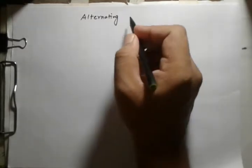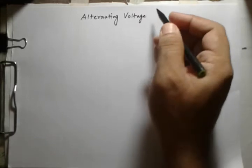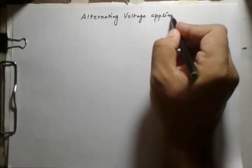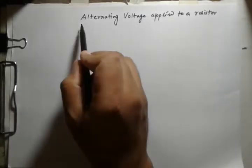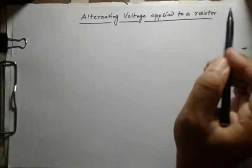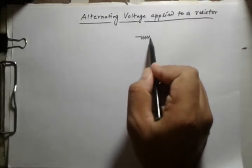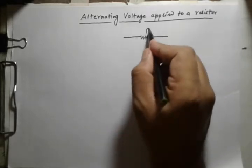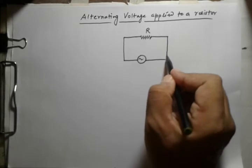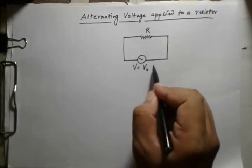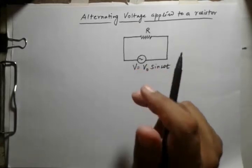Alternating voltage applied to a resistor. The circuit diagram will be like this — here is the resistance and the AC source. We give the name V is equal to V₀ sine omega t, and you can see the symbol of the AC source.